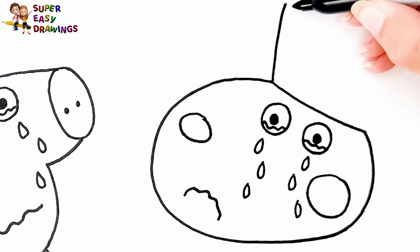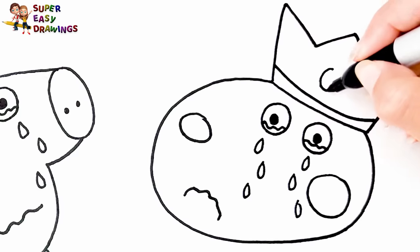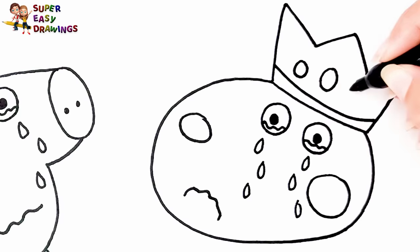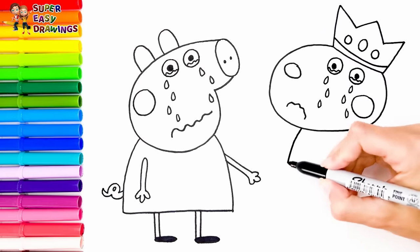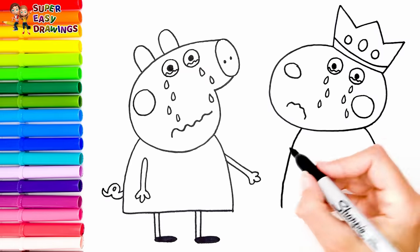Then I draw a crown on the top of her head. Now let's draw her body. She's holding her arm like this.